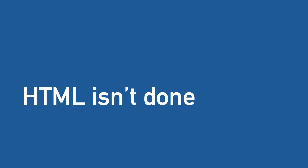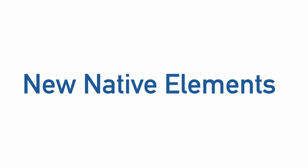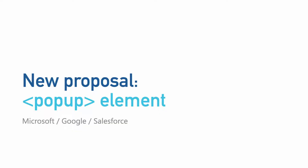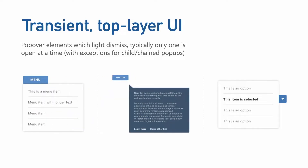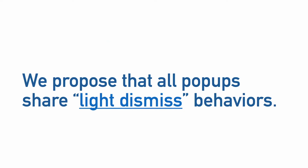HTML isn't done, and we're also looking at new native components. A lot of these proposals are coming out of our research and work that started with rebuilding the select element. While looking at how we wanted to build a new version of select, the team identified a need for a universal popup element. This proposed popup element is a transient user interface displayed on top of all other web UI — things like action menus, form elements, suggestions, content pickers, and teaching UI. The key differentiator for the popup element from other aesthetically similar elements is something called light dismiss behavior.